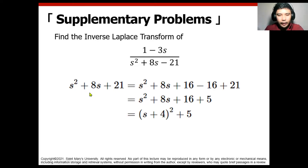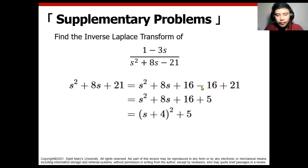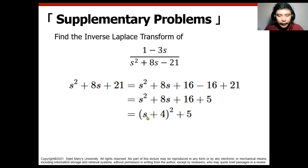Completing the square aids us to factor out and find the resemblance in the Laplace transform tables. With this, 16 minus 16 cancel, and solving the last two constant terms gives minus 21 plus 16, which equals negative 5, so the remaining constant is plus 5. We can now complete the square: s squared plus 8s plus 16 is a perfect square trinomial, which factors as s plus 4 multiplied by s plus 4, i.e., (s+4)^2. This is the completing the square concept.